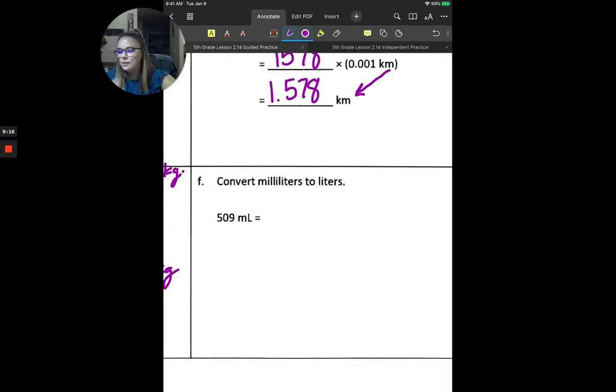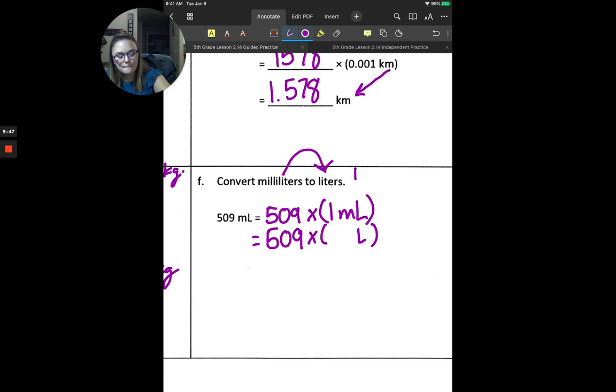And our last number, or our last set of numbers, we are going to be looking at milliliters to liters. So we have 509 milliliters, which we can think of as 509 times 1 milliliter. Which is going to equal 509 times something liters. So, 1 milliliter is going to be equal to 1 thousandth liters. So we're using that same conversion factor again. And we multiply. We can move across our place value chart. We can just move our decimal point. We can multiply however we want to get there. But we will end up with 509 thousandths liters.